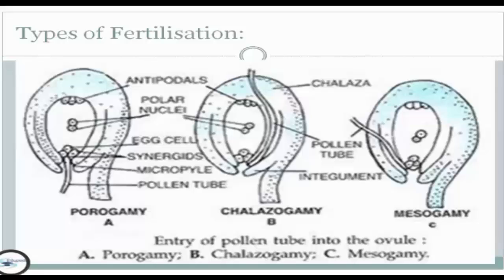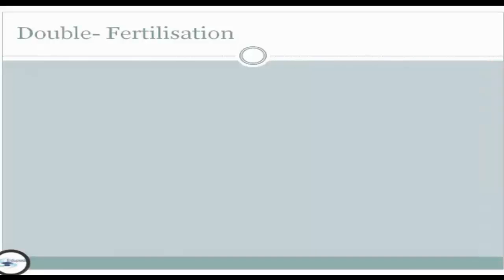These are the three types of fertilization: first, porogamy; second, chalazogamy; and third, mesogamy.